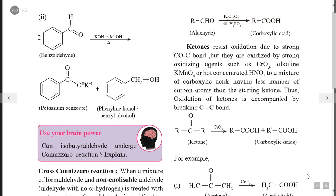The next reaction is Clemmensen and Wolff-Kishner reduction. In Clemmensen reduction, the carbonyl group of an aldehyde or ketone is reduced to a methylene group (CH2) on treatment with zinc amalgam and concentrated hydrochloric acid. The reagent used is Zn(Hg) and concentrated HCl.